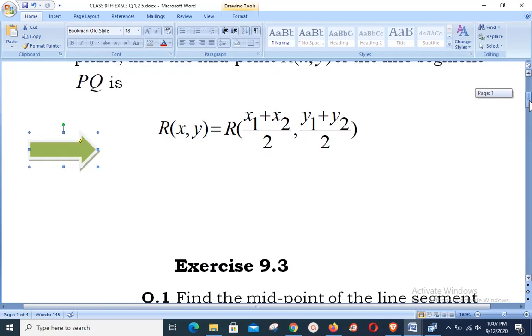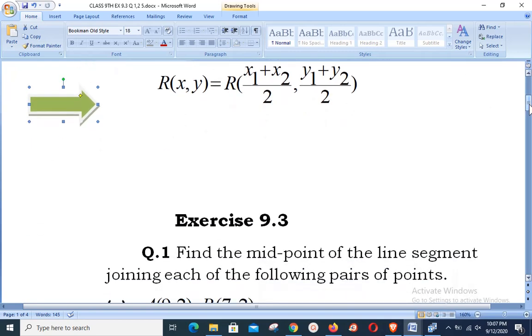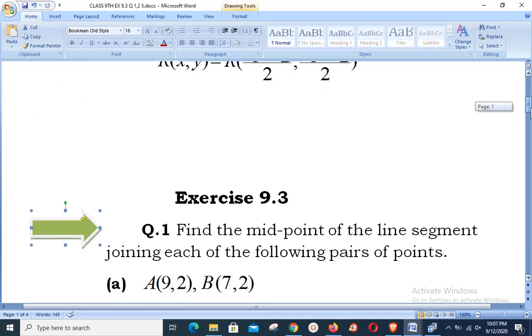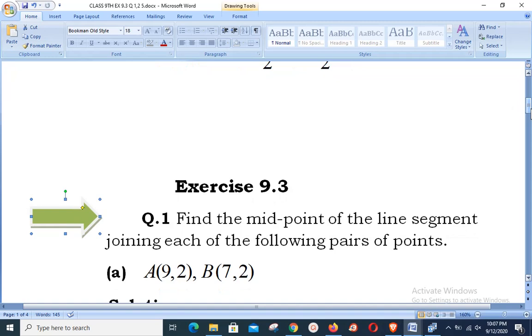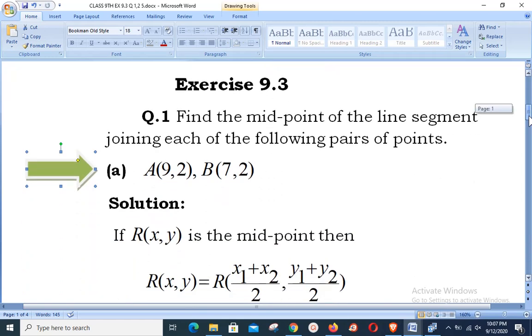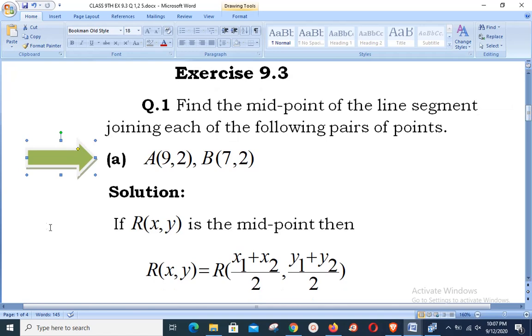We move forward to the start of Exercise 9.3. Question number 1 says: Find the midpoint of the line segment joining each of the following pairs of points. Part number 1 contains two points named A(9,2) and B(7,2).